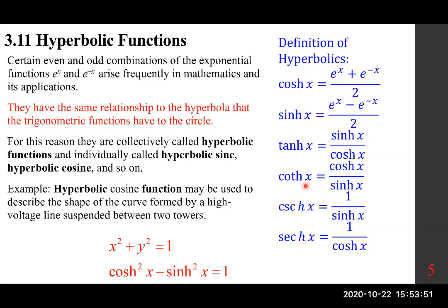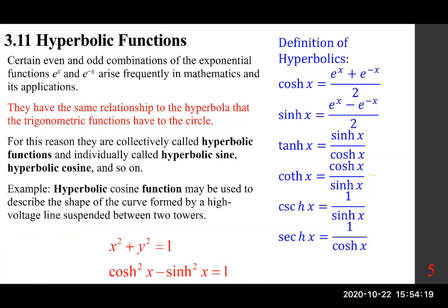Following the trigonometric functions, we define the remaining hyperbolic functions. Hyperbolic tangent is sinh over cosh, just as tangent was sine over cosine. Hyperbolic cotangent is cosh over sinh, or equivalently one over hyperbolic tangent. Hyperbolic cosecant is one over sinh, and hyperbolic secant is one over cosh — very similar to the trigonometric definitions.